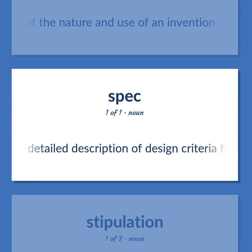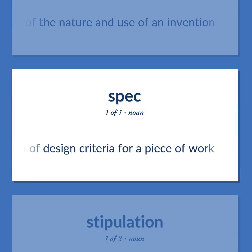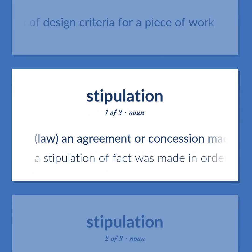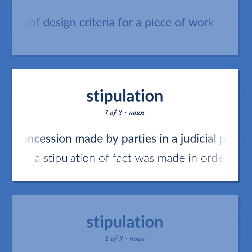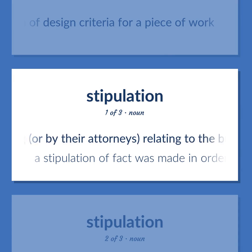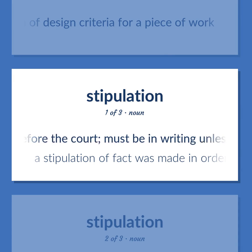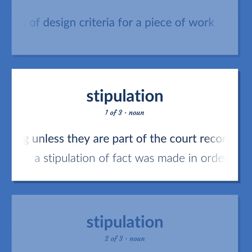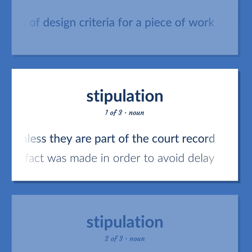A detailed description of design criteria for a piece of work. Law: an agreement or concession made by parties in a judicial proceeding, or by their attorneys, relating to the business before the court; must be in writing unless they are part of the court record. A stipulation of fact was made in order to avoid delay.